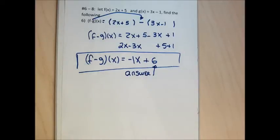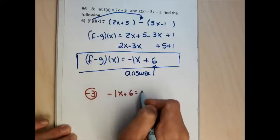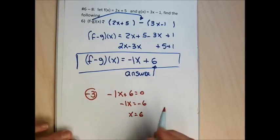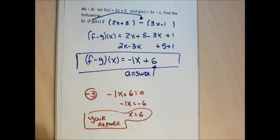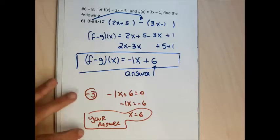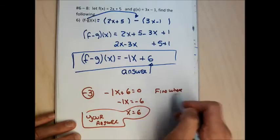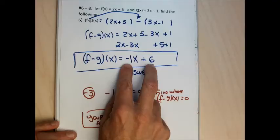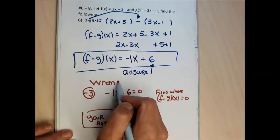A common mistake is to set the result equal to zero and solve for x, getting x = 6. That's wrong — the question says find (f - g)(x), not find where (f - g)(x) = 0. If the instruction said 'find where f minus g of x equals zero,' then solving would be correct. But as asked, setting it equal to zero is absolutely wrong and will cost you about 3 points. Don't do more algebra than is required.